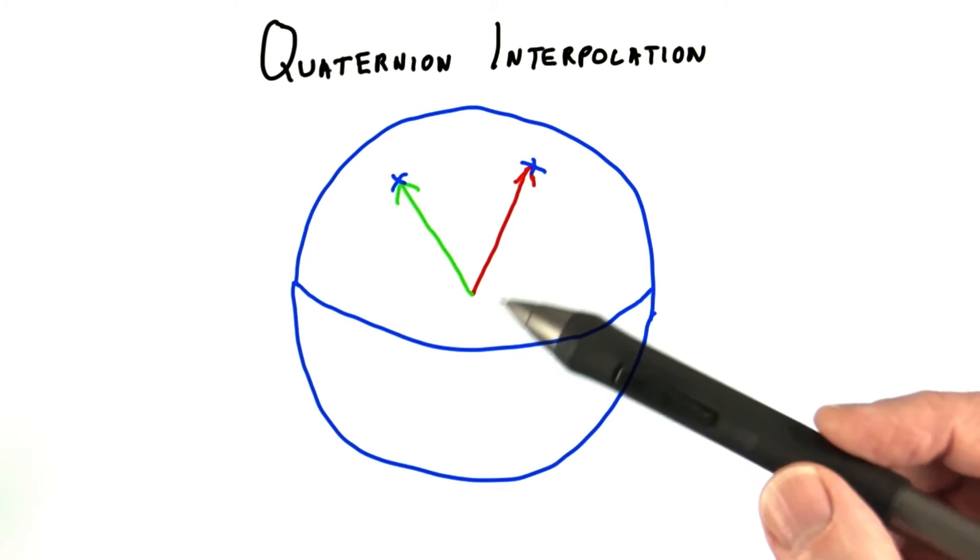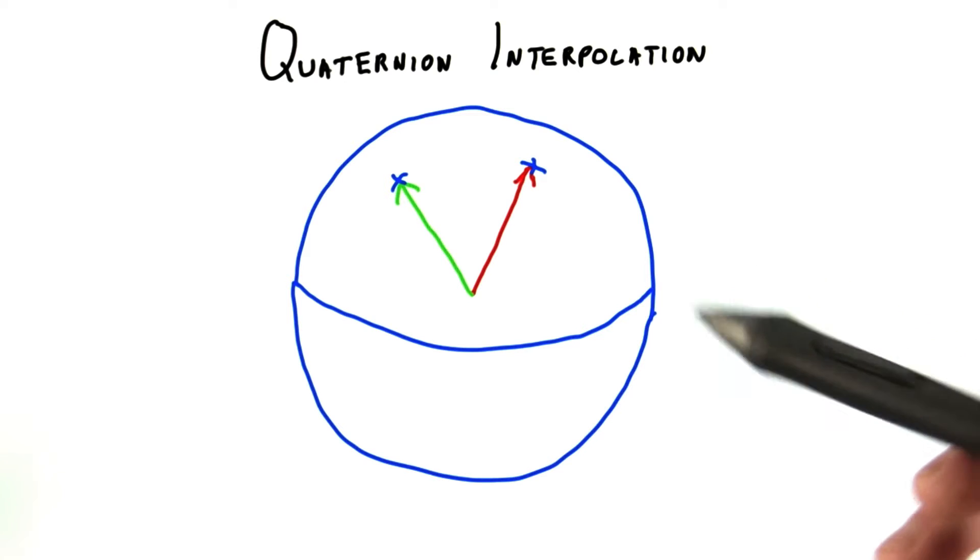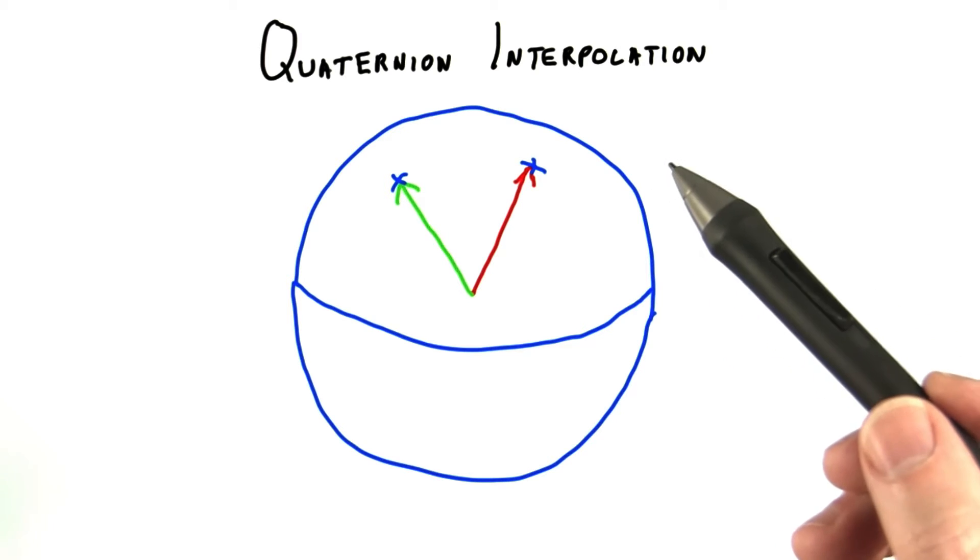Quaternions represent the orientation of an object, how it's rotated. They can do the same thing as axis-angle rotations. They rotate a model around a given axis by an angle.